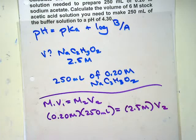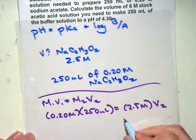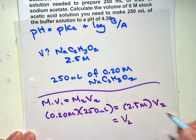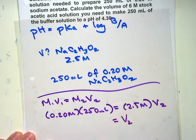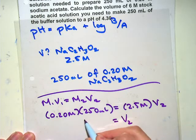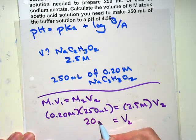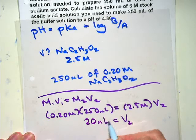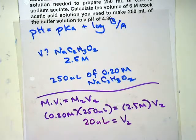So I needed 20 milliliters of the sodium acetate in order to prepare a 250 milliliter volume. How much water did I end up adding? The total final 250 minus the 20 gives 230 milliliters of water. So if I started off with 2.5 molar and 20 milliliters, adding 230 milliliters of water brings me up to the total of 250 and gives the final concentration I want.